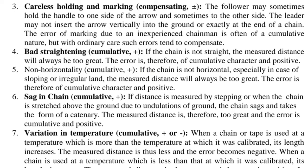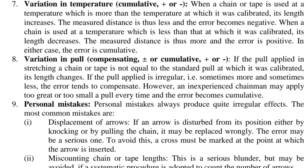6. Sag in chain — cumulative, positive. If distance is measured by stepping or when the chain is stretched above the ground due to undulation, the chain sags and takes the form of a catenary. The measured distance is therefore too great and the error is cumulative and positive. 7. Variation in temperature — cumulative, positive or negative. When a chain or tape is used at a temperature higher than that at which it was calibrated, its length increases and the measured distance is less, making the error negative. When used at a lower temperature, its length decreases, the measured distance is more, and the error is positive.